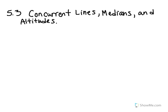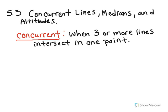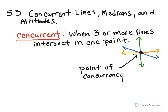In this tutorial we're going to talk about section 5.3: concurrent lines, medians, and altitudes. Let's get some vocabulary terms out of the way first. The first vocabulary word is concurrence, and this is when three or more lines intersect in one point, just like in this picture. Now the point where they intersect has a specific name, and that is called the point of concurrency.